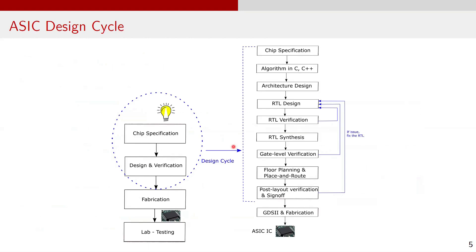Let's discuss further about the ESIC design flow. Here is a chart that illustrates the key stages of the ESIC design process. This process spans from defining specifications to generating a GDS2 file, which is the key information that is sent to IC manufacturers for fabrication. The different stages are: develop chip specification, algorithm design in C or C++, architecture design, RTL design using Verilog or VHDL, RTL verification, RTL synthesis or logical synthesis to get gate-level schematic netlist, verification of gate-level netlist, floor planning, placement and routing to obtain a layout, post-layout verification and sign-off checks, and generation of the GDS2 file and sending it to FAB. This structured approach ensures optimized performance, power, and area efficiency before manufacturing a final IC.